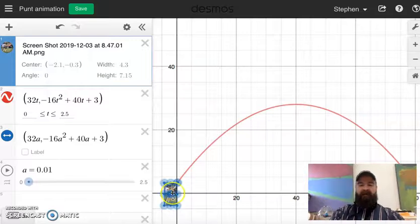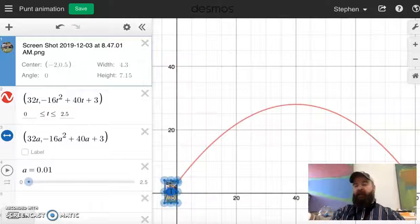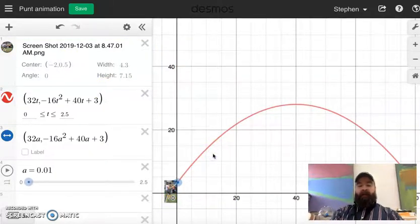We'll just say he's kicking the ball. We'll make it look like he's kicking it. It's not quite the scale, but it's all right for now. All right. Now that's how you get the punter in there.